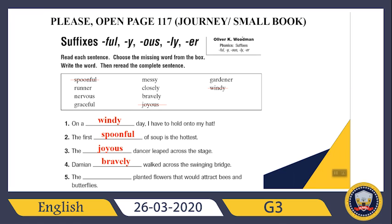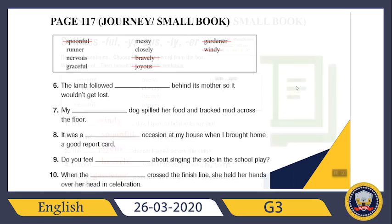What about the fifth sentence? 'The ___ planted flowers that would attract bees and butterflies.' Now let's check the sixth sentence: 'The lamb followed closely behind its mother so it wouldn't get lost.' If you follow someone, you will be very close. So: the lamb followed closely behind its mother so it wouldn't get lost.